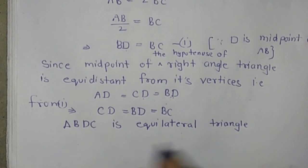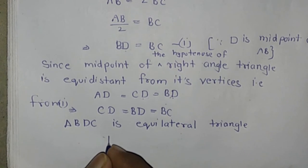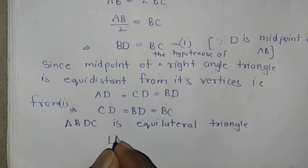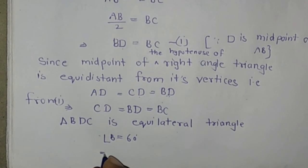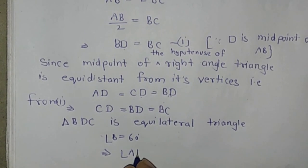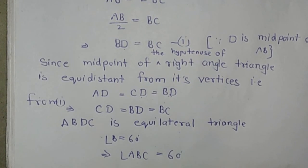And we know that each angle of an equilateral triangle is 60 degrees. Therefore, angle B equals 60 degrees, which implies angle ABC is 60 degrees.